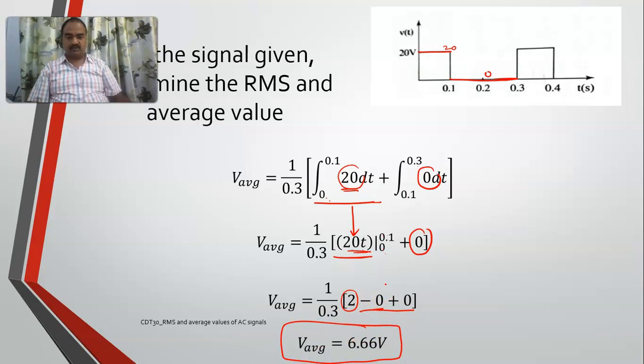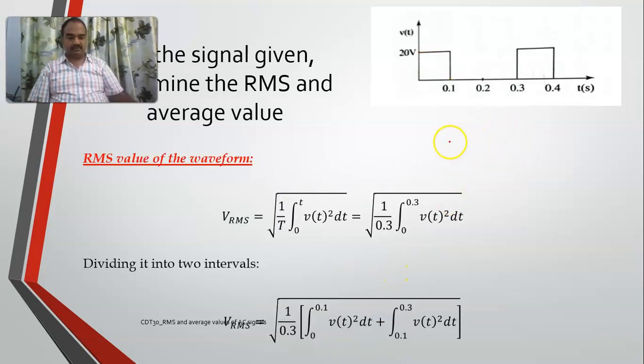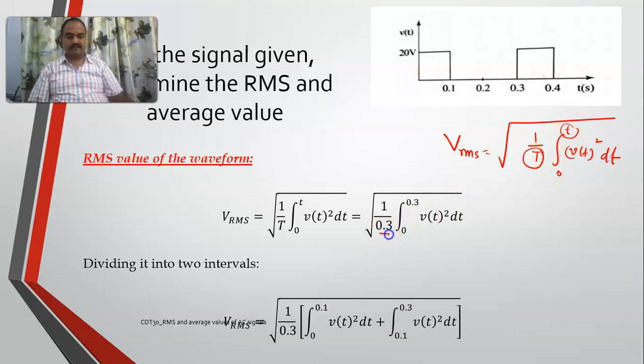Now if I move on to RMS value, RMS is equal to square root of 1 by t integral 0 to t, V of t squared dt. So similarly, the time period is 0.3 and I am employing from 0 to 0.3, same.